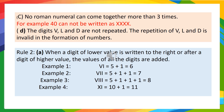According to rule 2, when a digit of a lower value is written after a digit of higher value, then the values of all the digits are added. For example, VI — V means 5 and I means 1, and 5 is greater than 1. Here, I is written after V, so we will add the digits. Therefore, 5 plus 1 is 6.